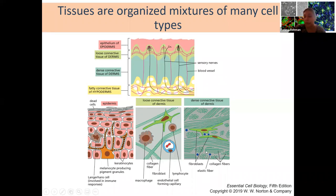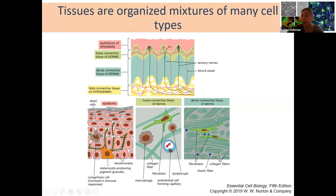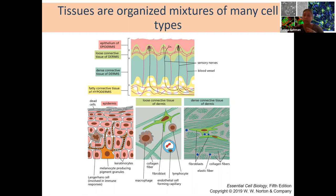In dense connective tissue, you won't normally see many endothelial or immune cells, but you'll still see some fibroblasts. Majority of dense connective tissue is made up of strong cross-linking collagen fibers laid out in particular manners depending on the organ. In our skin, collagen fibers are laid out in a basket-weave pattern—some longitudinally and some transversely connected—to create a strong barrier at our cell surface.